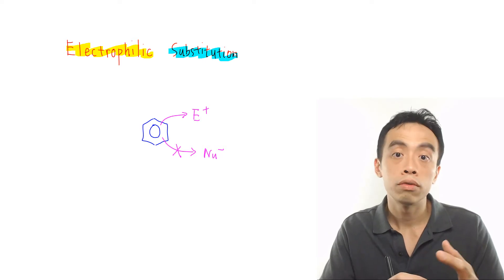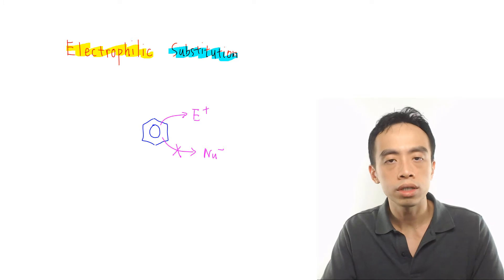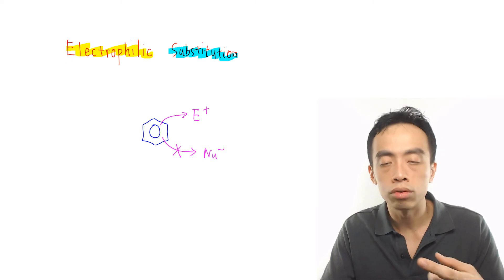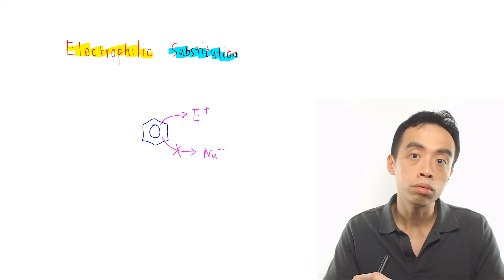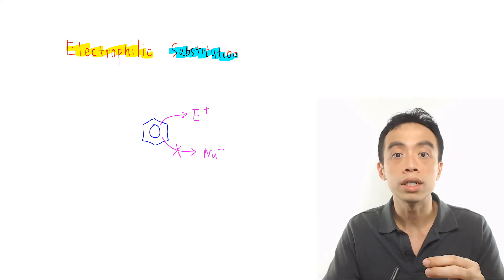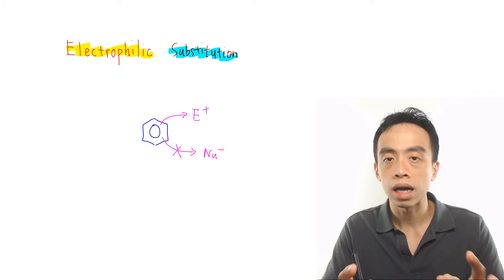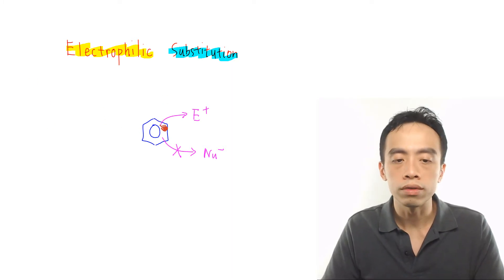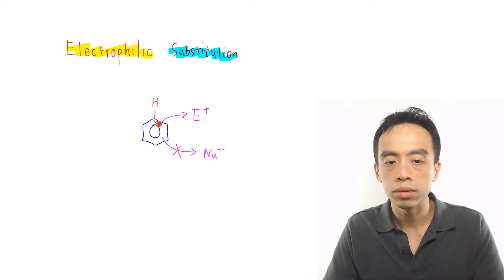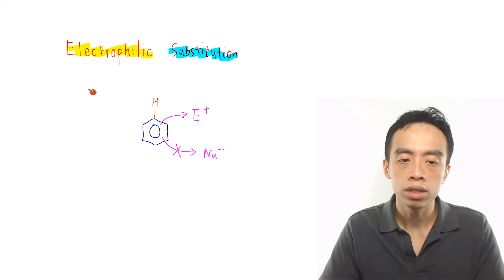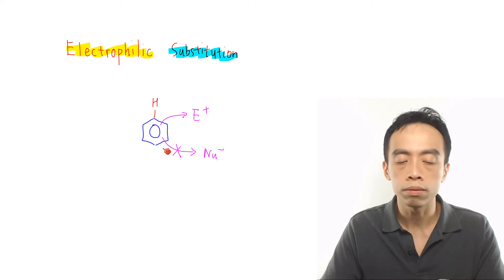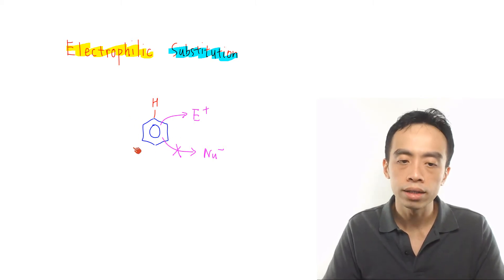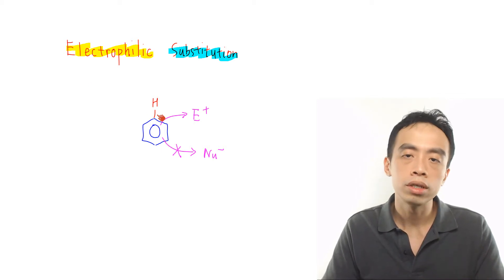Now, how about substitution? If you look at the degree of saturation of the carbon: in general, if it is unsaturated, it will undergo addition reaction; if it is saturated, it tends to undergo substitution reaction. If it is saturated, it cannot add a group because carbon would have five bonds, which is not possible. So it has to undergo substitution reaction if the carbon is saturated or has four sigma bonds. What is interesting for benzene is that carbon in benzene is actually unsaturated — each carbon has only three sigma bonds.